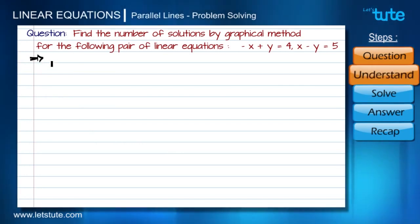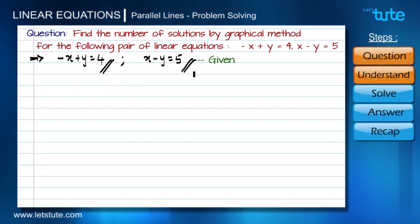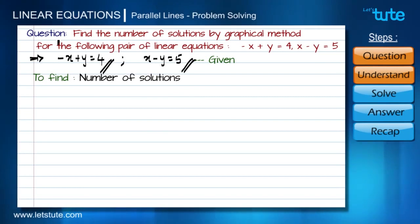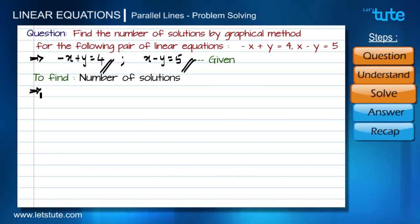Step number one: let's understand this problem. Here we are given two equations. We have to draw graphs for these two equations since it is asked to solve by graphical method, and then we have to find the number of common points, that is the number of solutions, between the lines from these two equations.